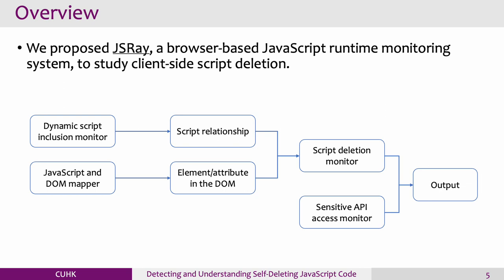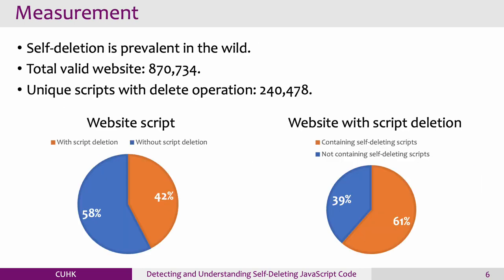To better understand the behavior of the script, we monitor sensitive API access at the same time. We measured one million websites on the web using our tool. Our results showed that self-deletion is prevalent in the world.